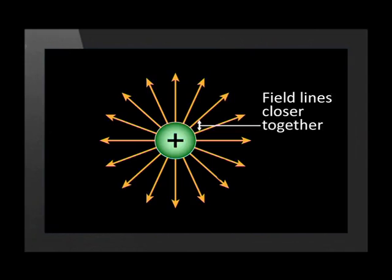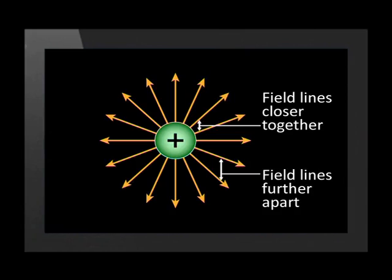The strength of the electric field is represented by how far apart the electric field lines are. You can see that close to the charge, the field lines are closer together. However, further away from the charge, the field lines are further apart and the strength of the electric field decreases. Electric field strength depends on the magnitude of the charge and also on the distance from the charge.